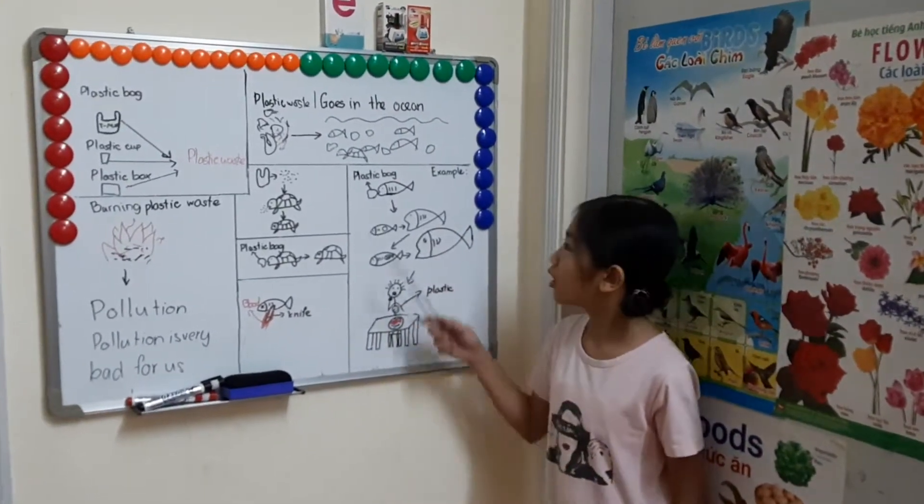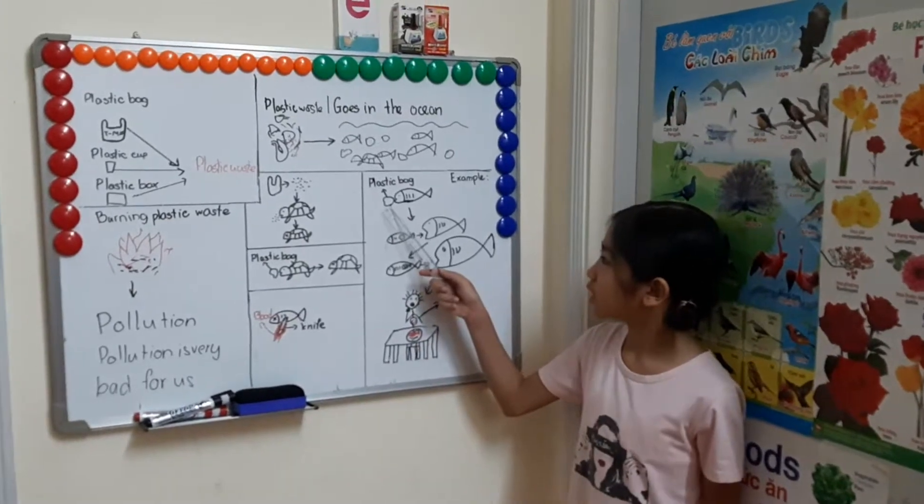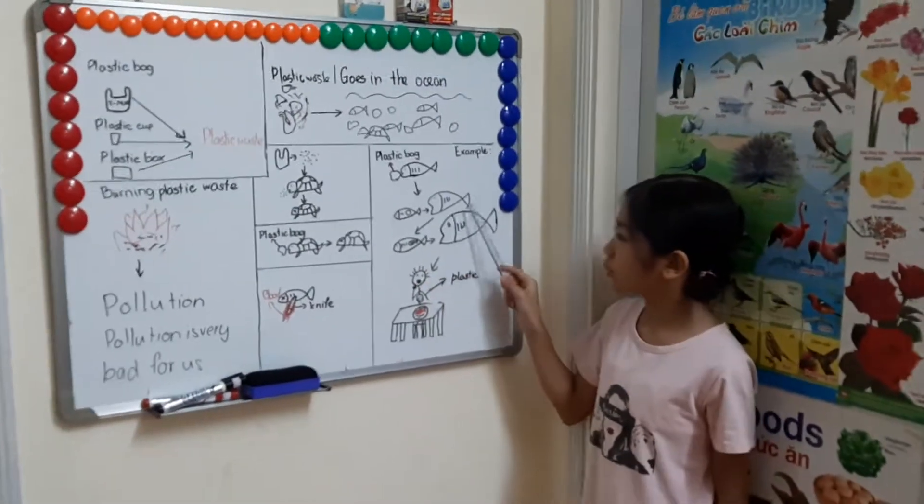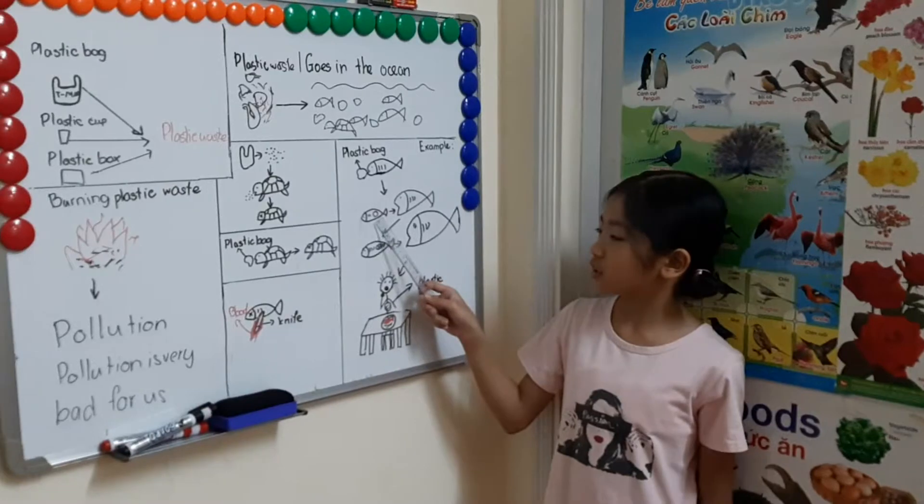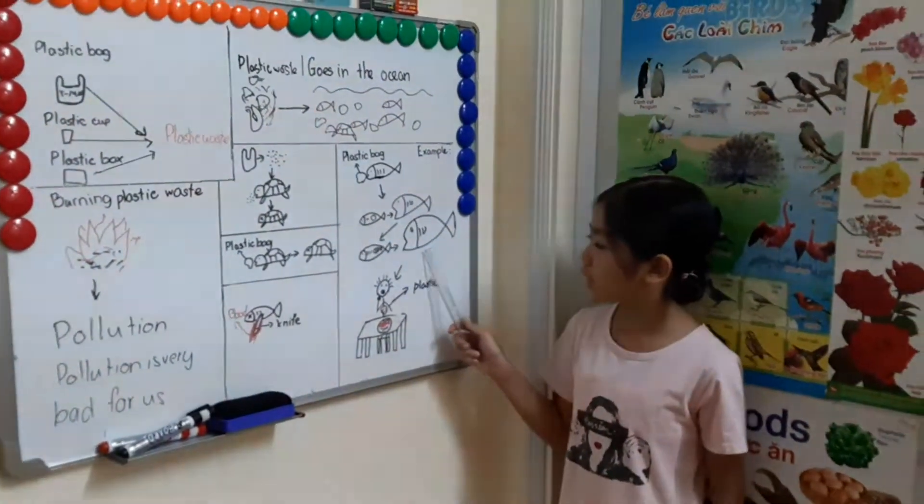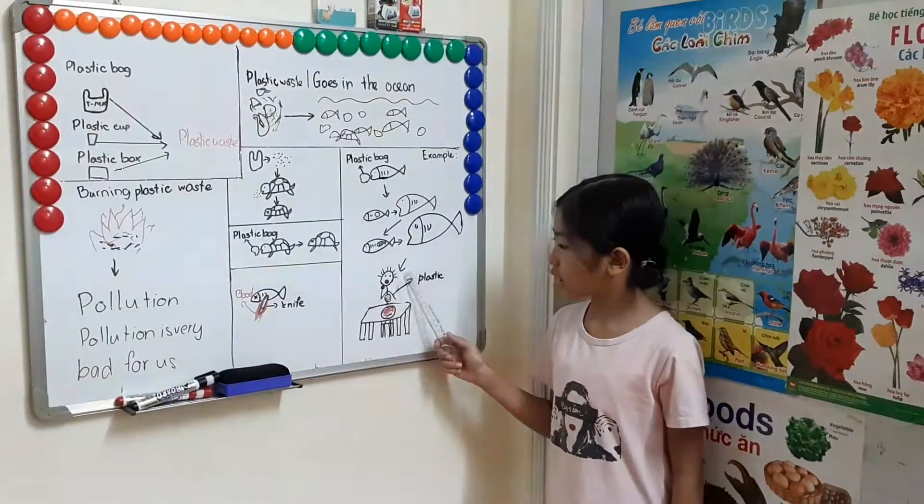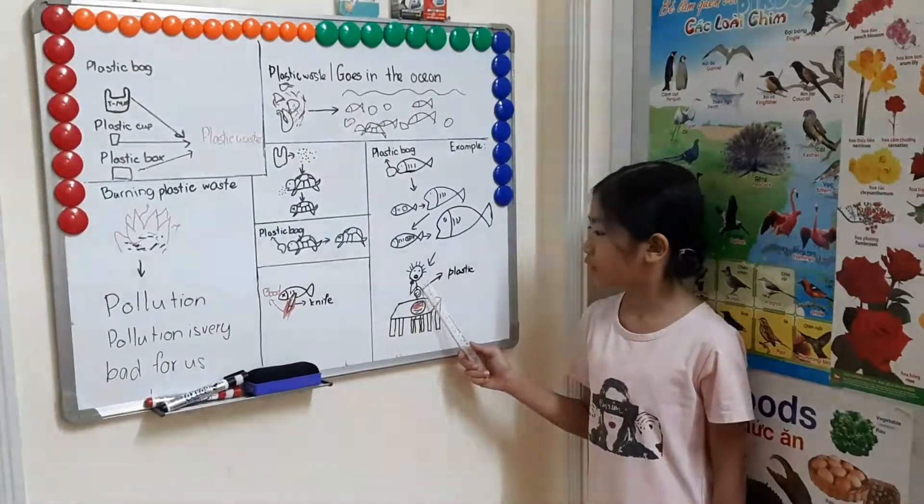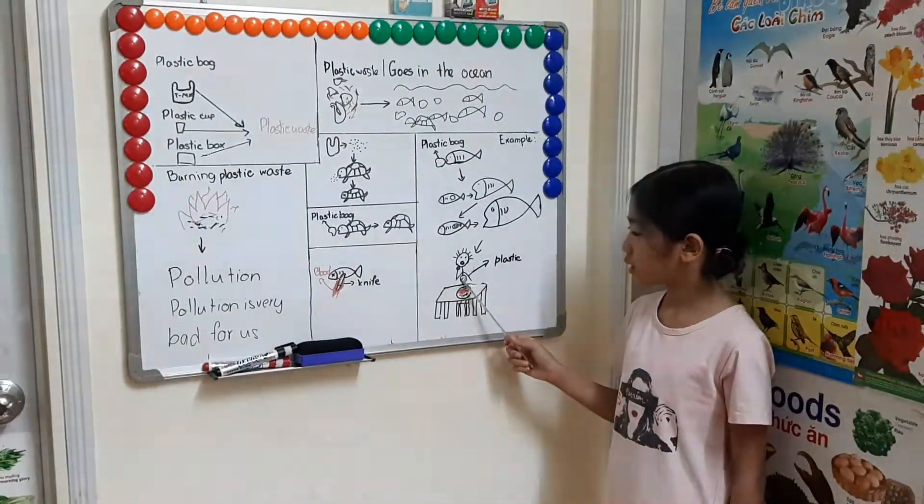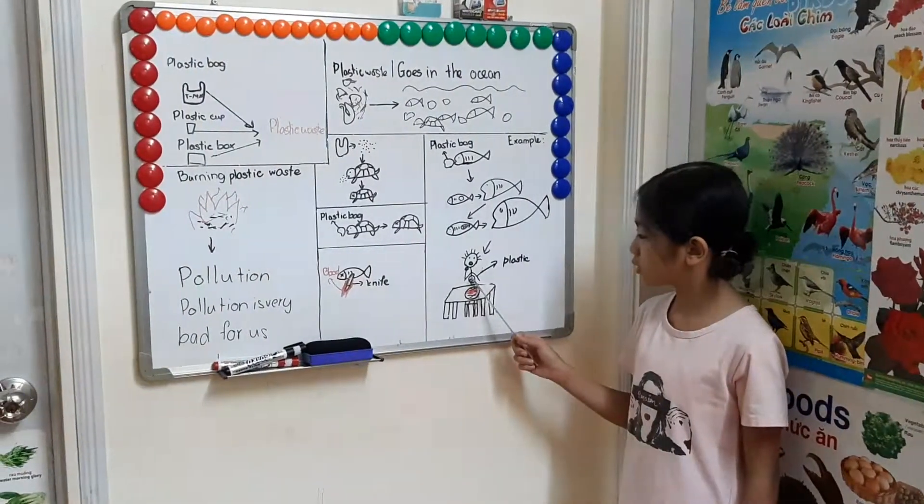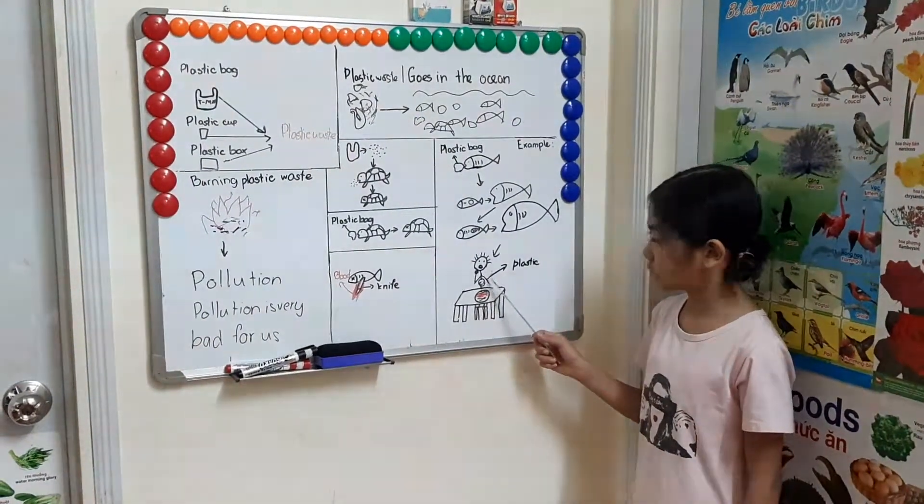For example, small fish eat the plastic, then bigger fish eat the small fish, and even bigger fish eat those bigger fish. Eventually, in our stomach, there is plastic.